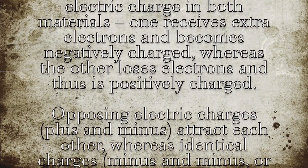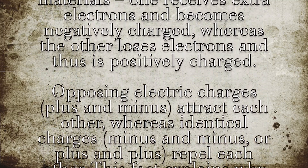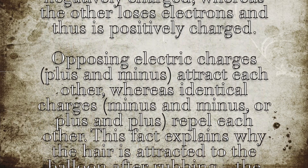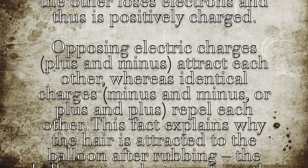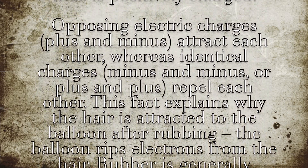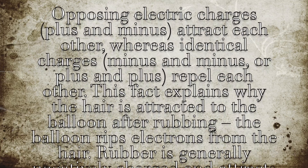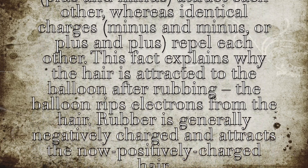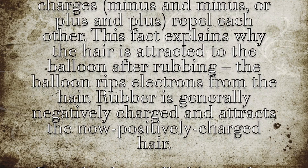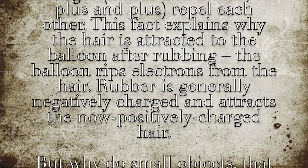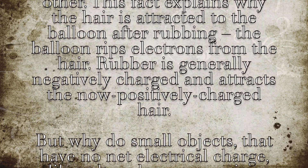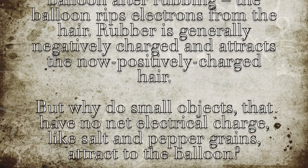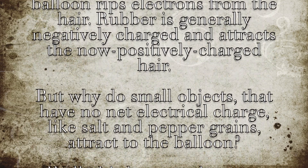Opposing electric charges — plus and minus — attract each other, whereas identical charges — minus and minus, or plus and plus — repel each other. This fact explains why the hair is attracted to the balloon after rubbing: the balloon rips electrons from the hair. Rubber is generally negatively charged and attracts the now positively charged hair.